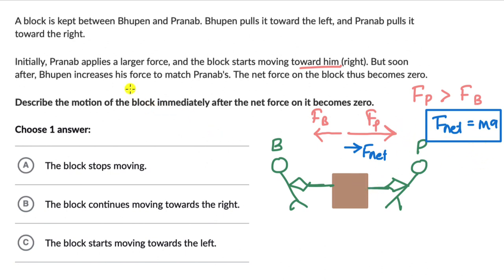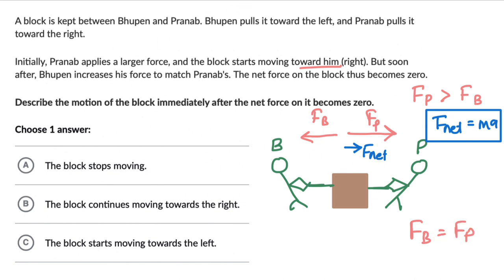But soon after, Bhupen increases his force to match Pranab's, so the force to the left is no longer less than the force applied by Pranab — it is exactly the same. So there will be no net force; these two forces are equal. Fnet is zero.